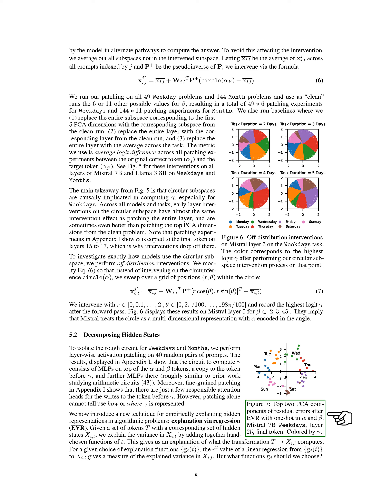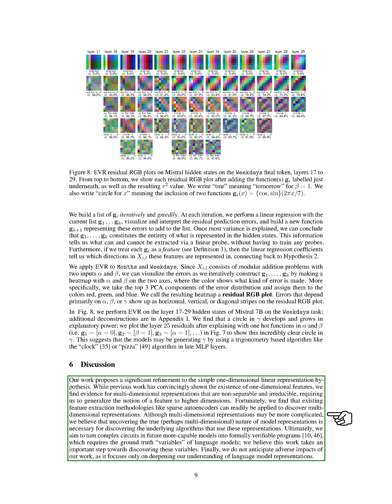Our work challenges the one-dimensional linear representation hypothesis by uncovering evidence of multidimensional and non-separable representations in language models. We advocate for exploring higher-dimensional features to better understand model representations and the algorithms they employ. By delving into complex circuits in advanced models, we aim to develop formally verifiable programs based on the true variables of language models. Our focus is solely on enhancing our comprehension of language model representations. We decompose hidden states to isolate the circuit for weekdays and months using layer-wise activation patching, revealing a circle in gamma suggesting a trigonometry-based algorithm in late MLP layers, and pushing us to generalize the notion of features to higher dimensions.